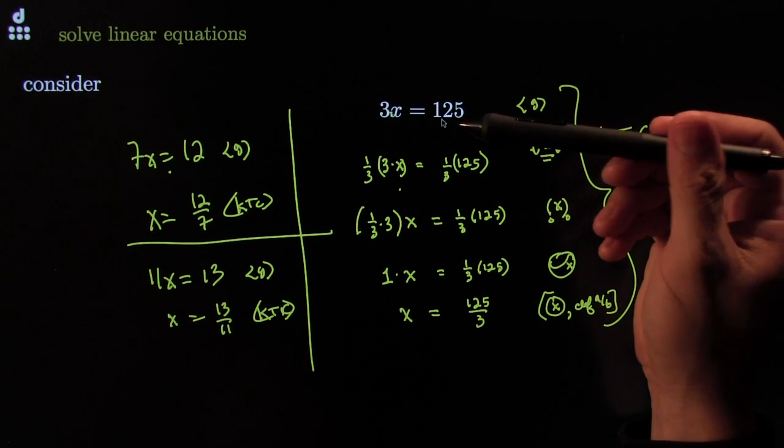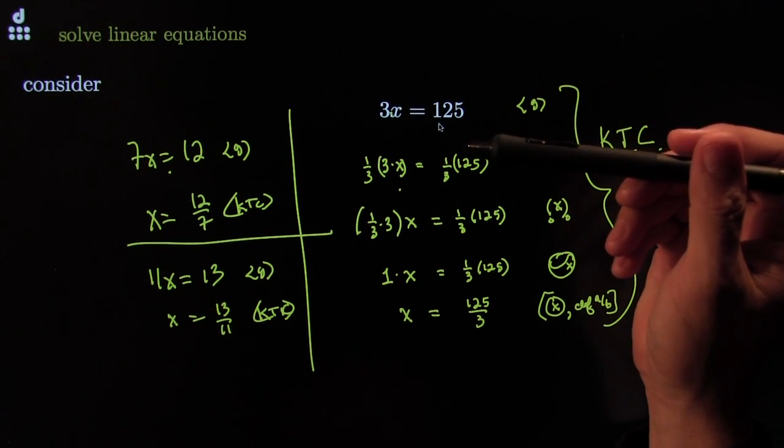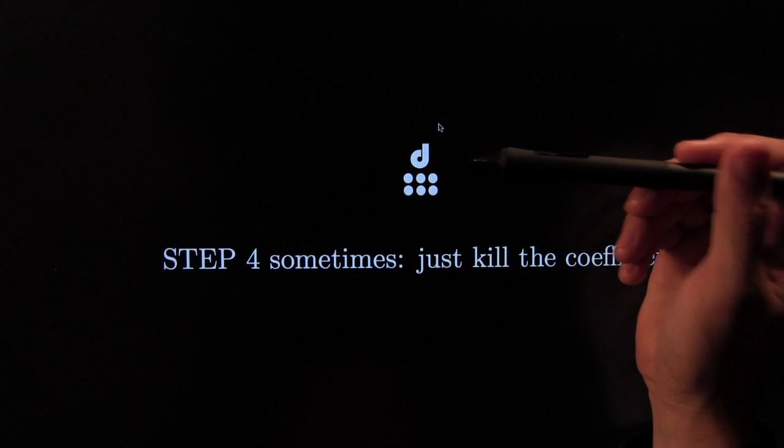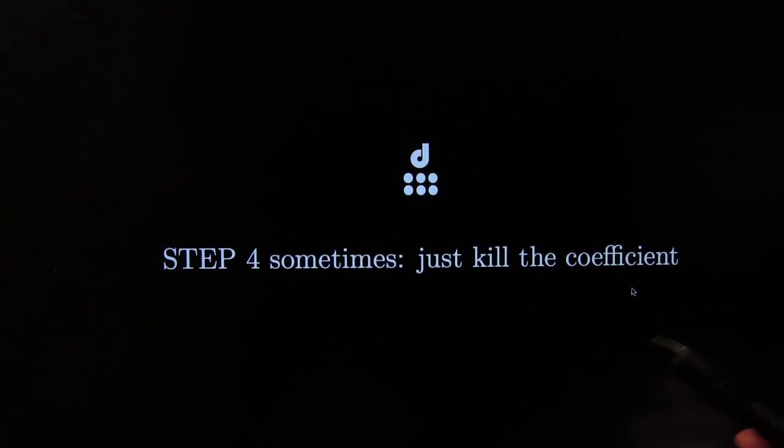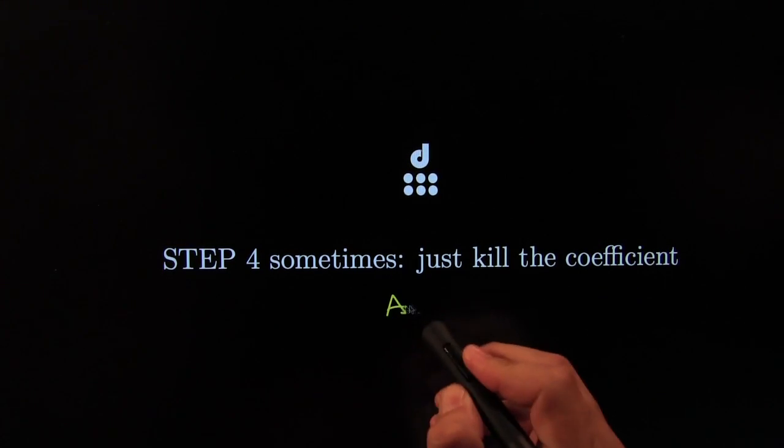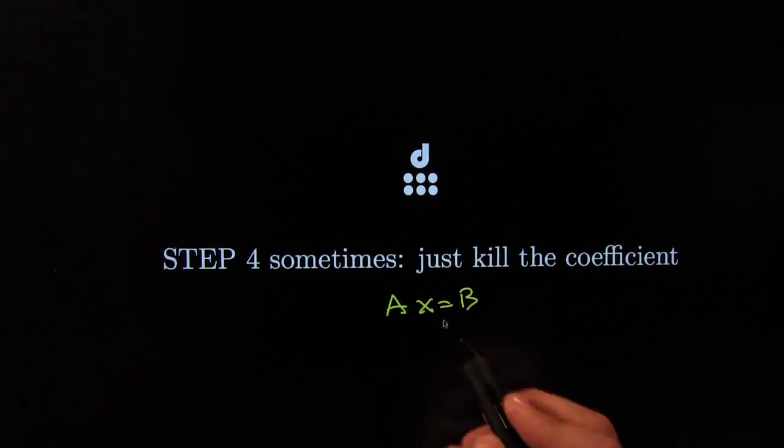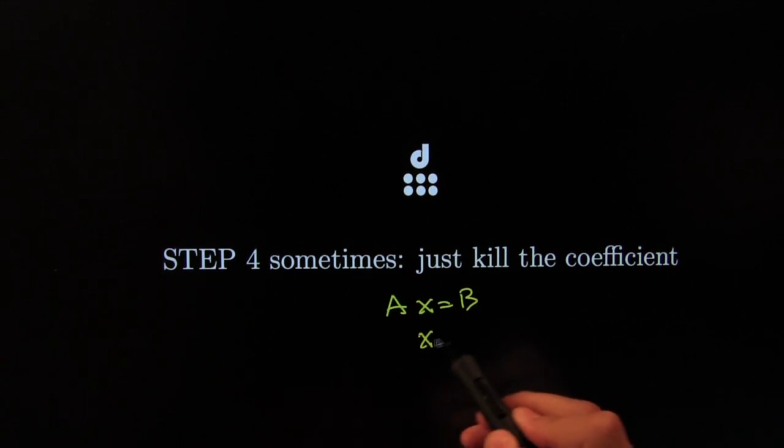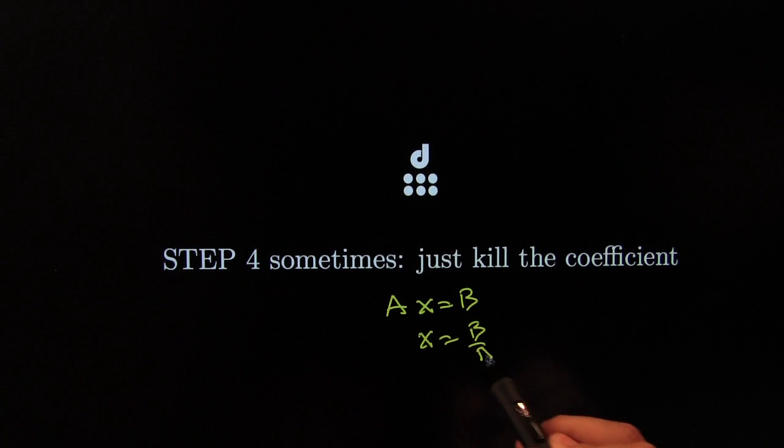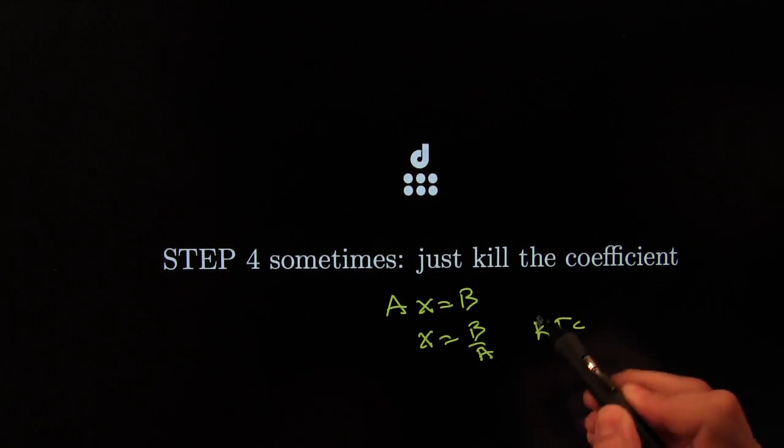This right here is the simplest case. Often though, you have to do a few steps before you get here. That's why I call this step number 4. Just kill the coefficient. If you get to this ax is equal to b. If you get to that part right there, you can just go with kill the coefficient. And you're done.